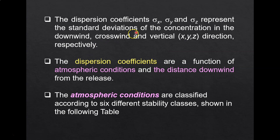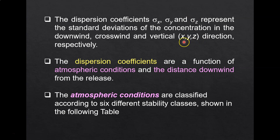Dispersion coefficients sigma x, sigma y, and sigma z represent the standard deviation of the concentration in the downwind, crosswind, and vertical directions respectively. Sigma x is for the downwind direction, sigma y is for the crosswind direction, and sigma z is for the vertical direction. We have the assumption that sigma x is always equal to sigma y, meaning the concentration in the downwind and crosswind directions are always the same.